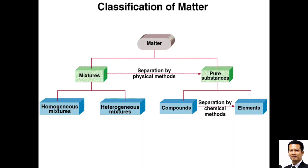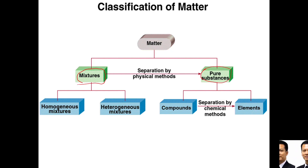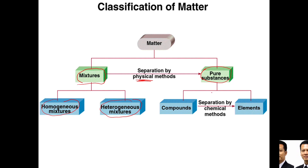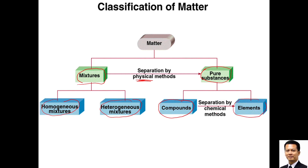Matter can be classified into two things: mixture and pure substance. Mixture can be separated by physical methods — physical methods means filtration, sorting, and so on. Mixtures can be further divided into homogeneous mixture and heterogeneous mixture. Pure substance can be further divided into compounds and elements. Compounds can be separated by chemical methods, such as electrolysis — that is a chemical method, not physical.